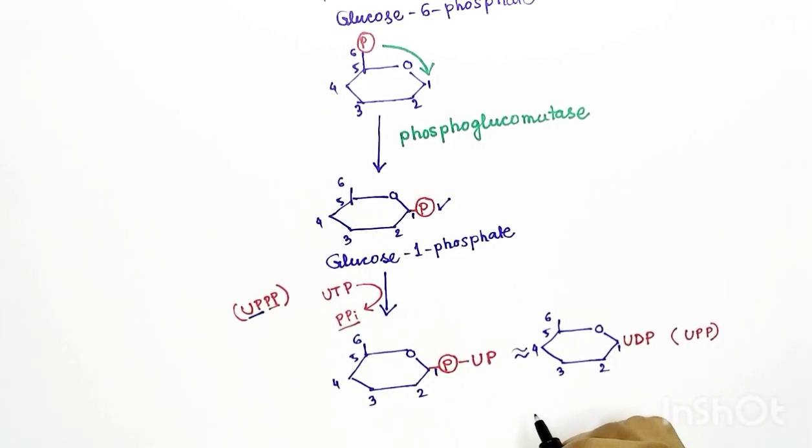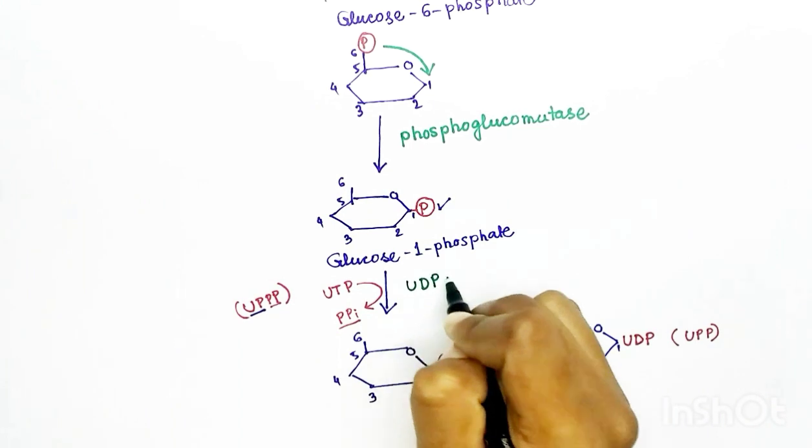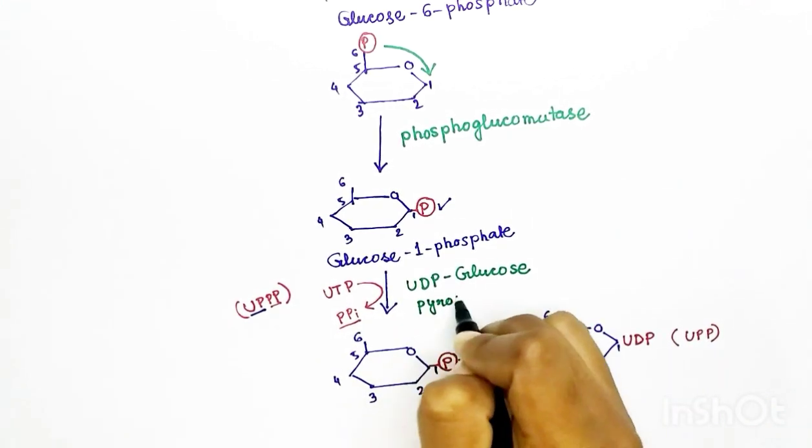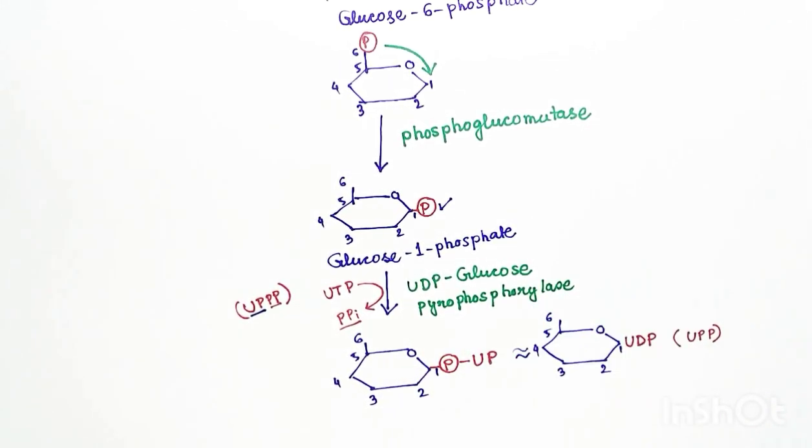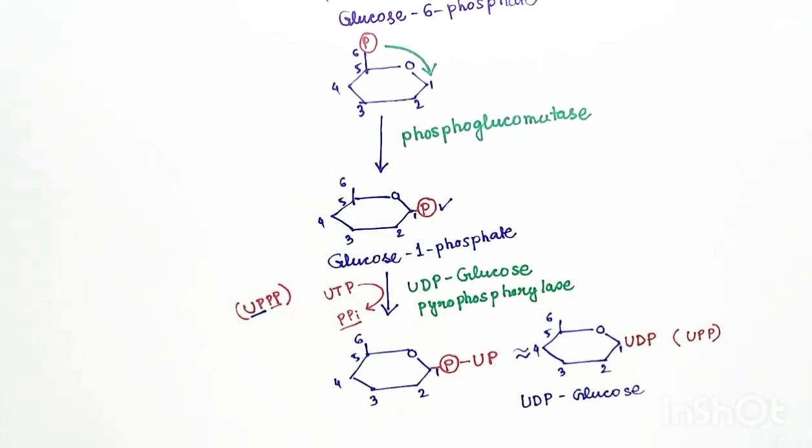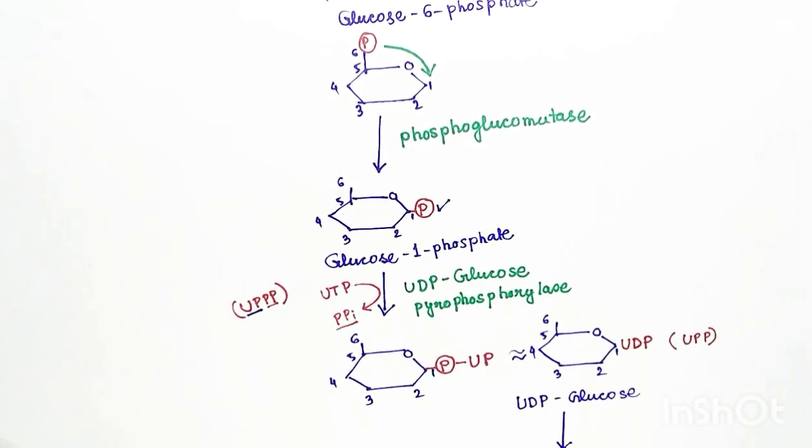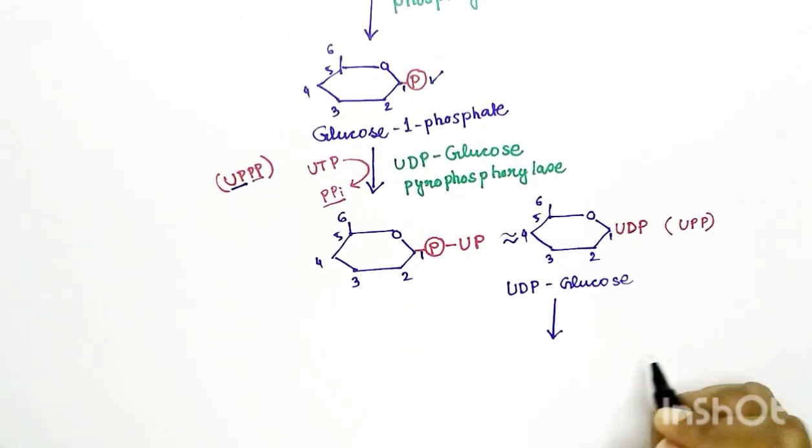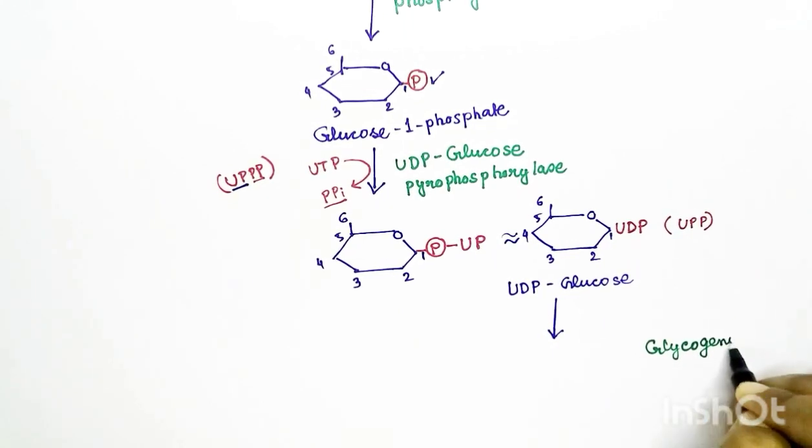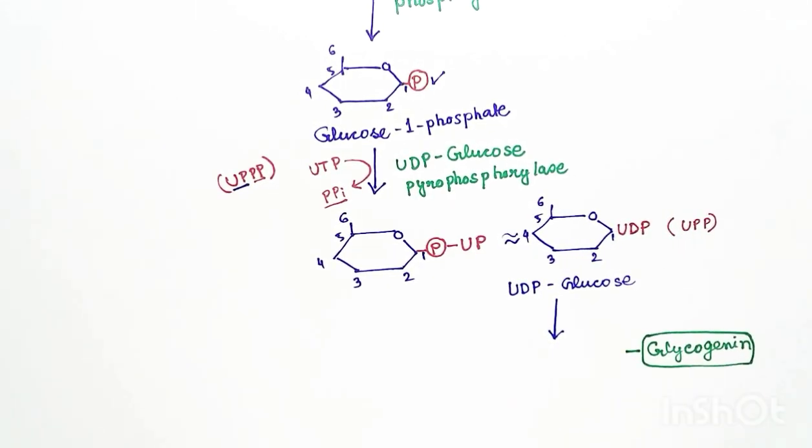After adding up to the glucose, it has total two phosphates, so it is called uridine diphosphate glucose. As uridine diphosphate is added to one glucose molecule, the enzyme used is UDP-glucose pyrophosphorylase and the product is UDP-glucose.